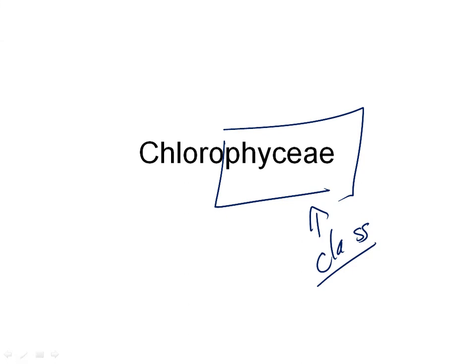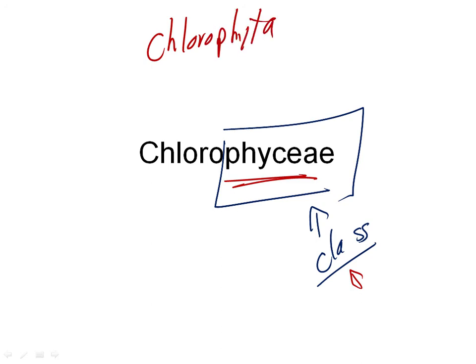The ending '-phyceae' is the class ending, so that's how we know it's the class and not the division. The division we're working on is the Chlorophyta, and there are three classes in that: Chlorophyceae, Ulvophyceae, and Charophyceae. Over the next two weeks, we'll do those three classes and go on to our next group of organisms after the green algae.